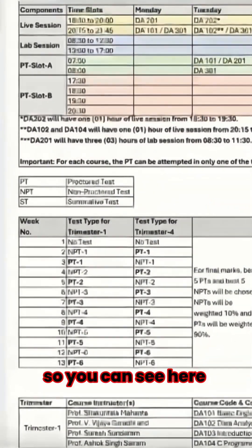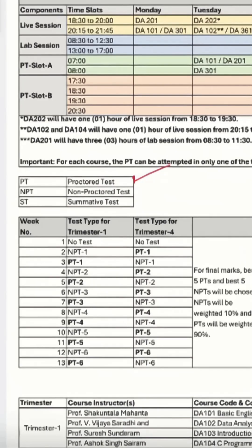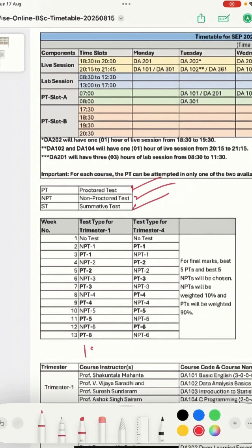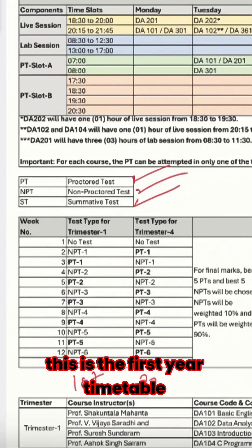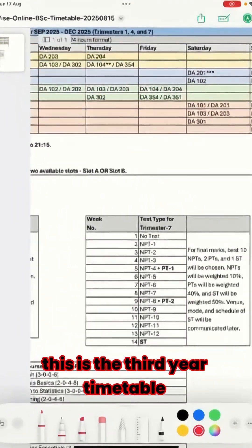You can see here that the examination has been divided into three categories: proctored test, non-proctored test, and submittive test. This is the first year timetable, this is the second year timetable, and on the right hand side this is the third year timetable.